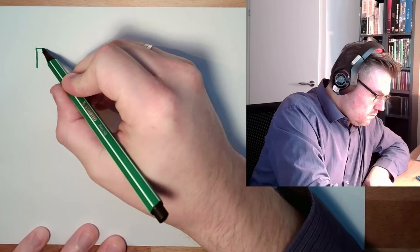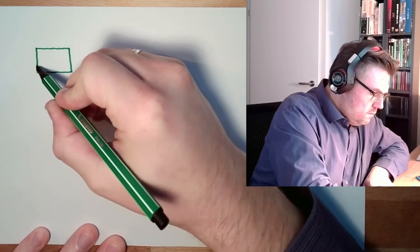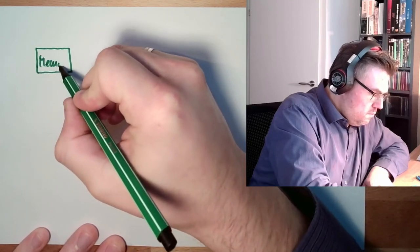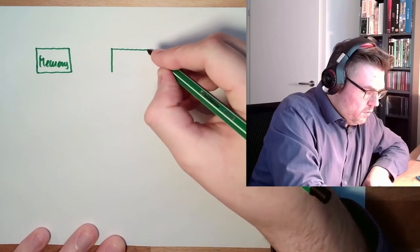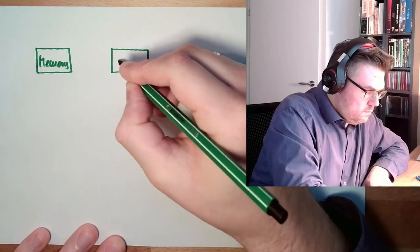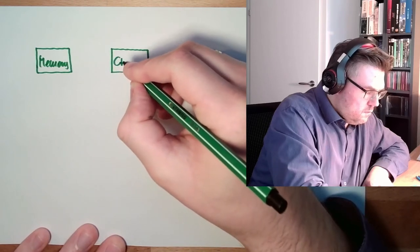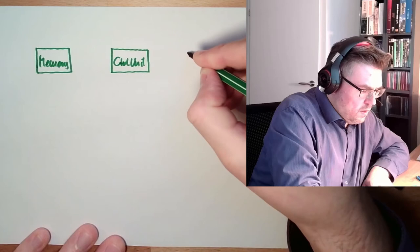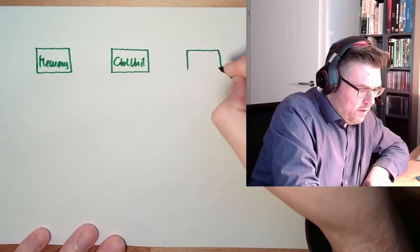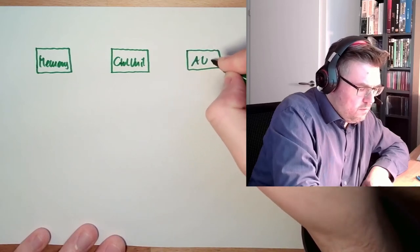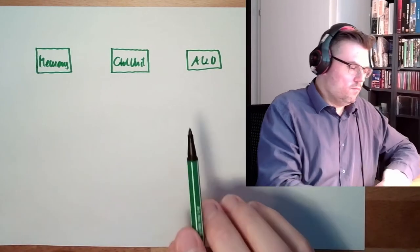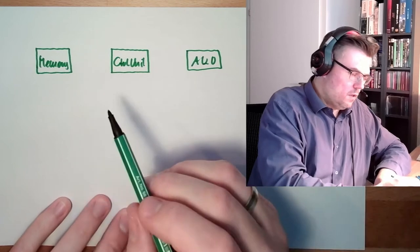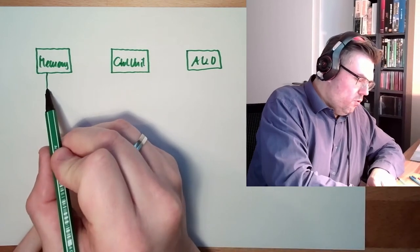Last time we talked about the Von Neumann architecture. Just to remind you, the Von Neumann architecture had memory, a control unit, and an arithmetic and logic unit.